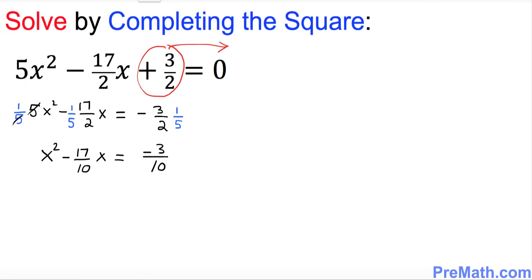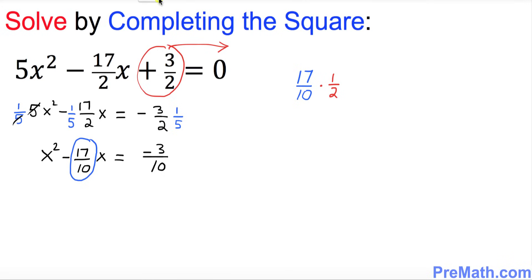Now the next thing — look at the coefficient of x, which is negative 17 over 10. Don't worry about the negative sign; we are only interested in 17 over 10. Write down 17 over 10 and divide this number by 2, which is the same as multiplying by 1 over 2. That gives us 17 over 20.